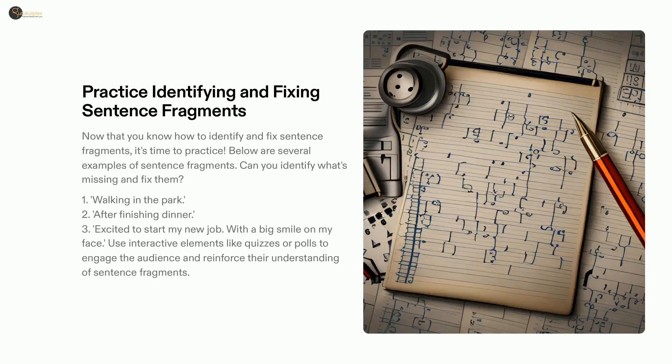Identifying and fixing sentence fragments can be challenging, making it important to practice. Here are a few examples to get you started. 'John was walking in the park' is a complete sentence, compared to its fragment 'walking in the park.' Similarly, 'she finished dinner after a long day at work' is a sentence, compared to its fragment 'after finishing dinner.' A run-on sentence such as 'I was excited to start my new job. I had a big smile on my face' can be corrected by splitting it into two sentences. To help your audience understand the concept, you can utilize interactive activities like quizzes or polls.